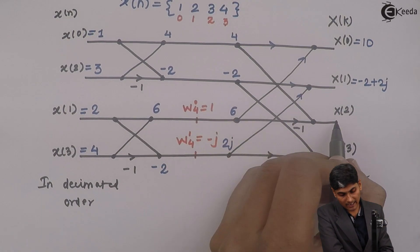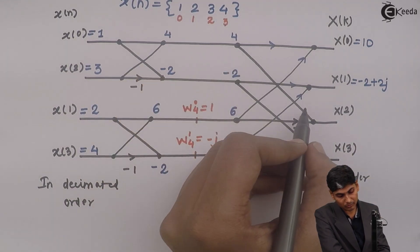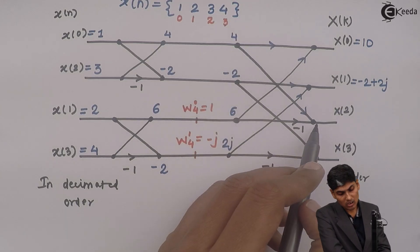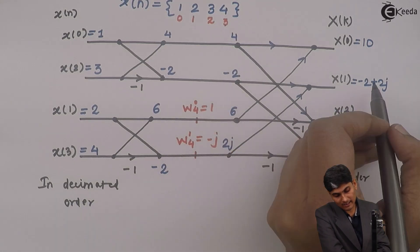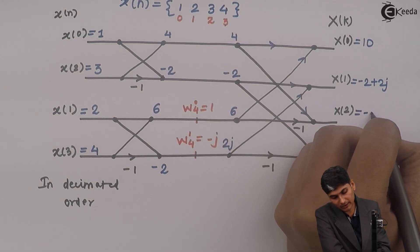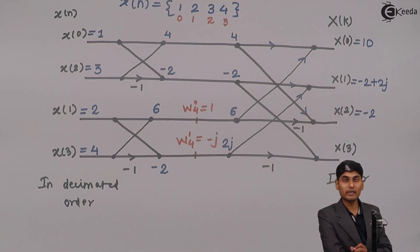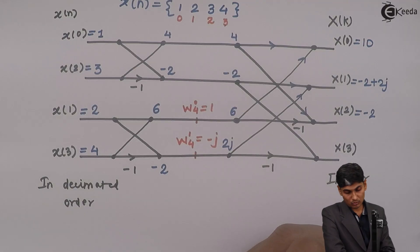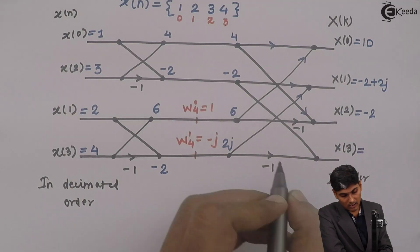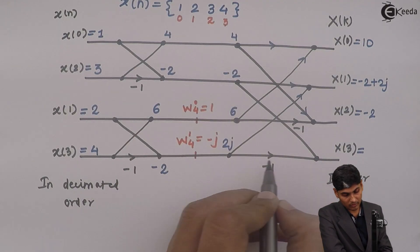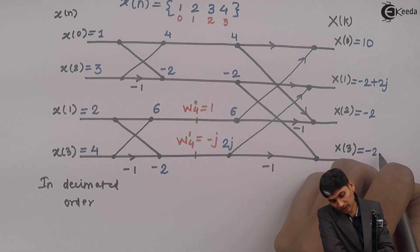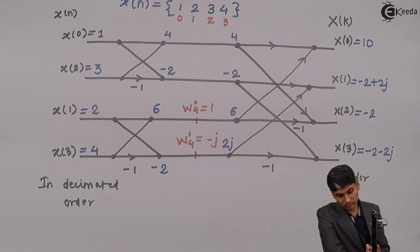Then we have at x of 2, we are going to subtract. So I am going to subtract 4 minus 6, which is equal to minus 2. And finally, I am going to subtract this. So this is minus 2 and this 2j multiplied by minus 1. So this becomes minus 2 minus 2j.